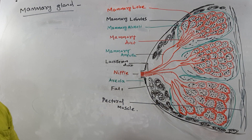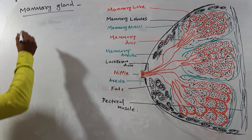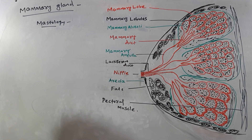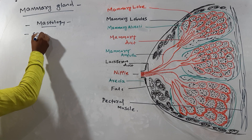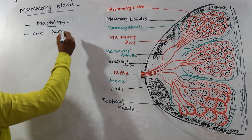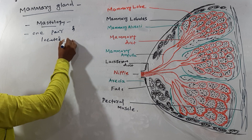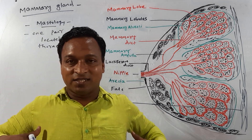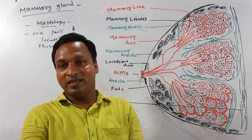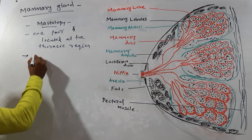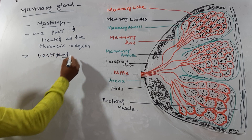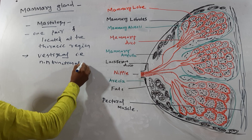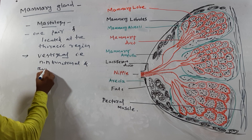Now we talk about mammary glands. The study of mammary glands is called mastology. These are one pair in number and located at the thoracic region. In males, mammary glands are vestigial — that is, non-functional and rudimentary.